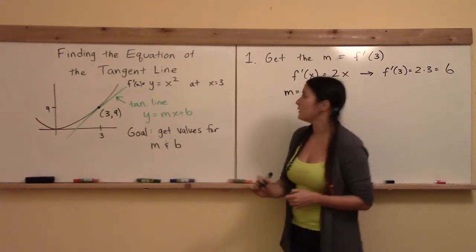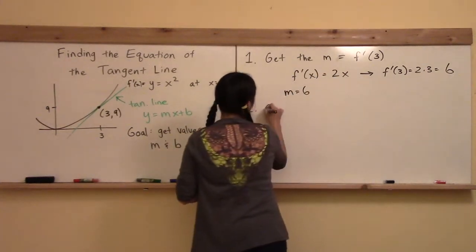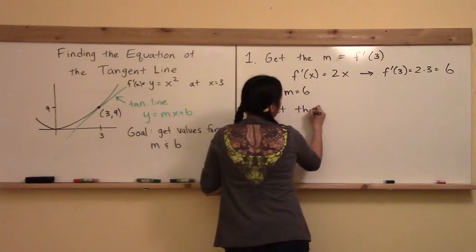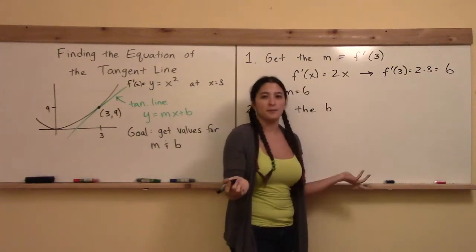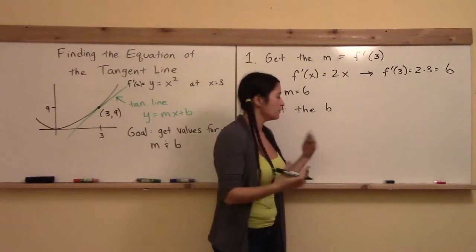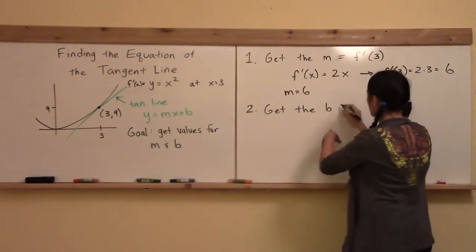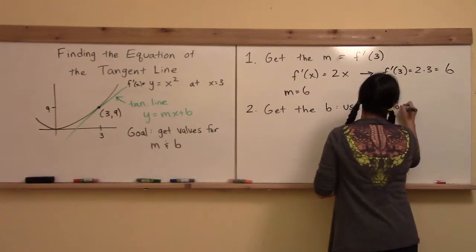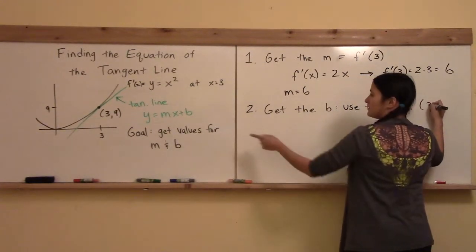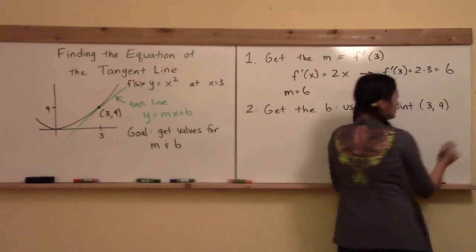Now we have to get the value for b. So in step two, we're going to get the b, and usually when you get the b, some people might use the slope intercept form or whatever. Here, we're going to use the point, use the x, y point, and in this case, it's 3, 9.